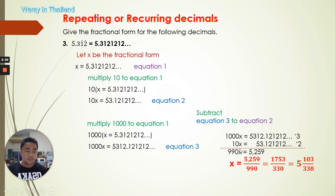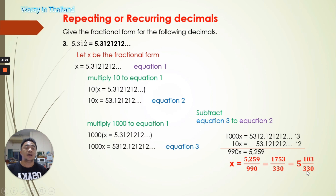We divide both sides by 990: x = 5259 over 990. Dividing by 3: 5259 ÷ 3 = 1753, and 990 ÷ 3 = 330. So x = 1753 over 330. We can convert this improper fraction into a mixed number: 5 and 103 over 330. That's how you figure out the fractional form of the repeating decimal 5.31212...